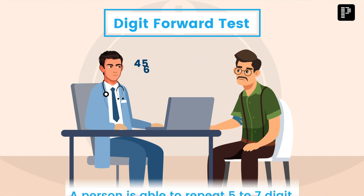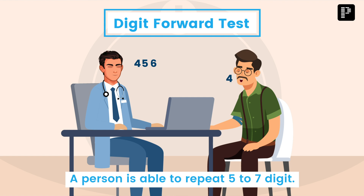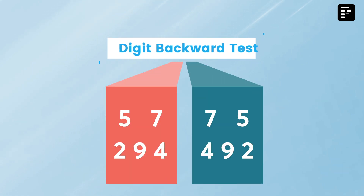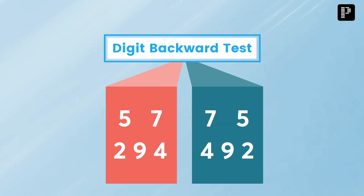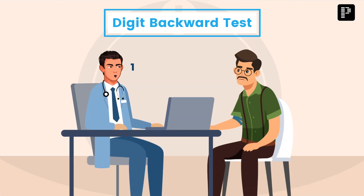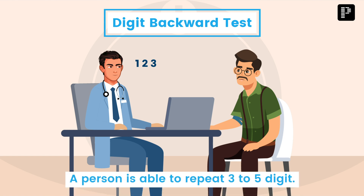Normally, a person is able to repeat five to seven digits in the digit forward test. The second component is the digit backward test, where the patient repeats the digits in the backward direction. Normally, a person is able to repeat three to five digit numbers in this component.